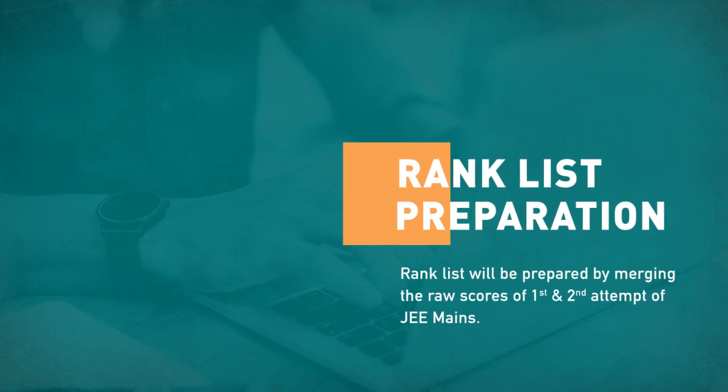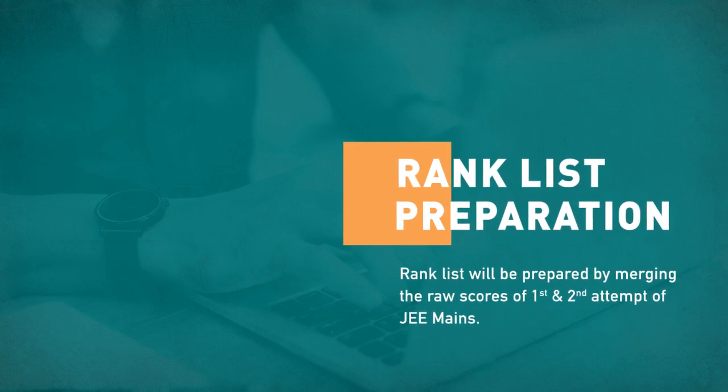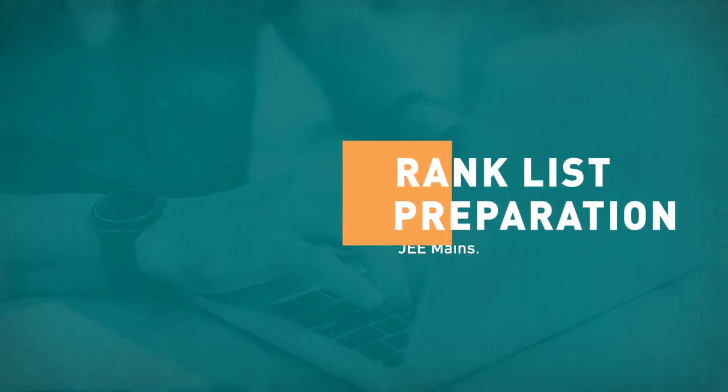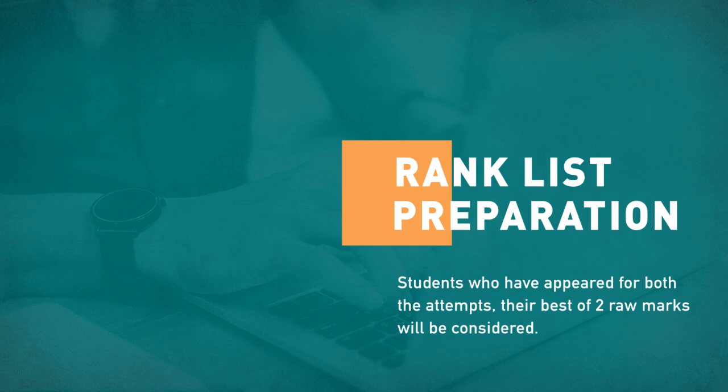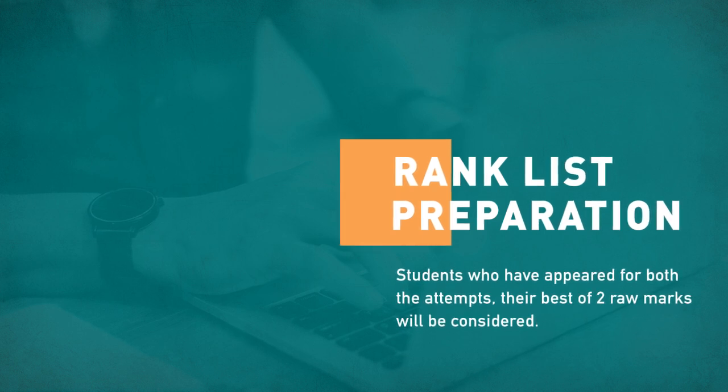For rank list preparation for JEE Main 2019 Paper 2, the rank list will be prepared by merging the raw scores of the first and second attempt of JEE Mains. For students who have appeared for both the attempts, the best of the two raw marks will be considered, comprising total marks obtained in the first as well as the second attempt along with All India Rank and All India Category Rank.